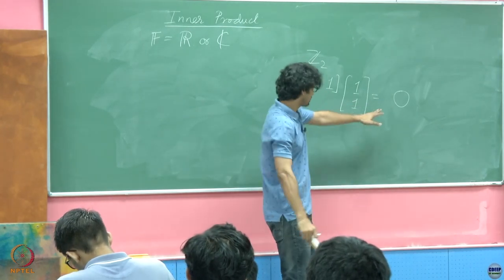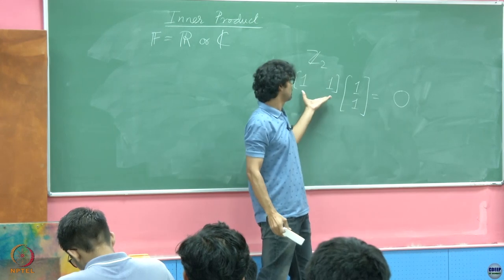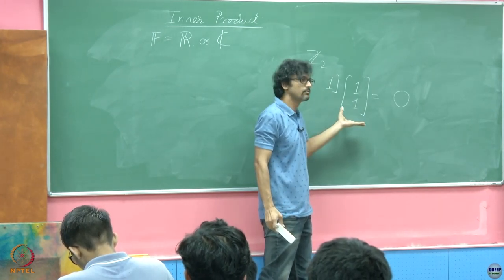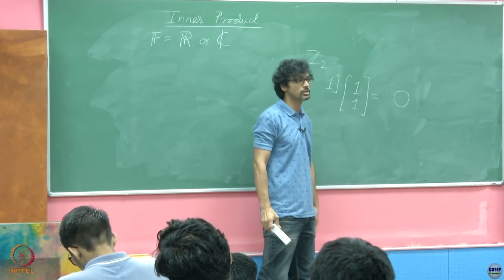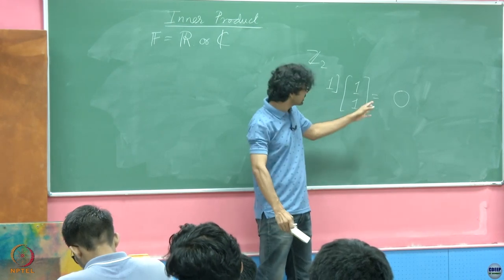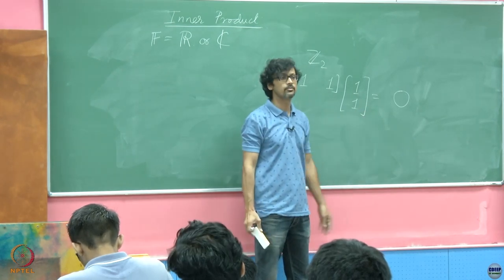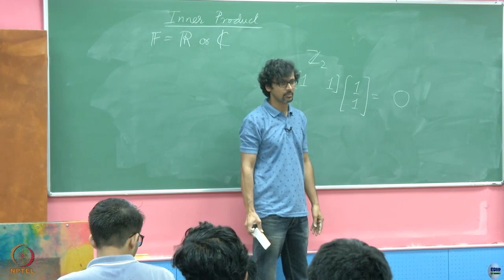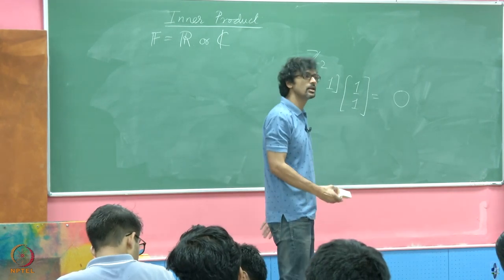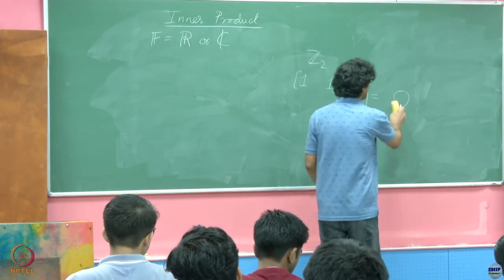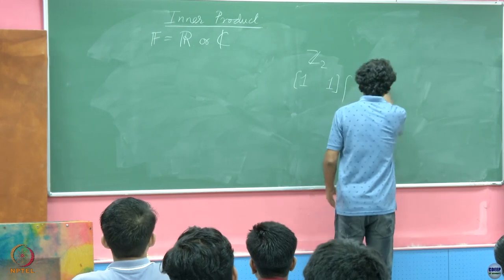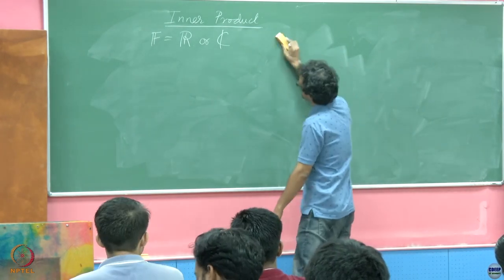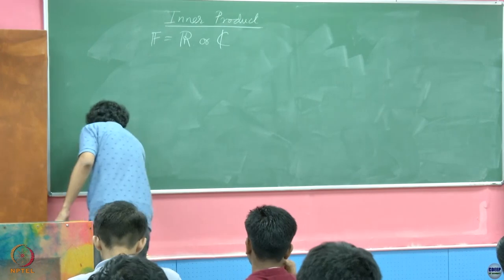So this is an inner product of a non-zero vector with itself leading to 0, and it is exactly things like these that we want to rule out from any inner product. Now we will define an inner product, and you will see that the dot product you are familiar with is just a special case of it.